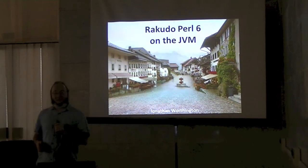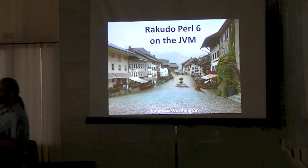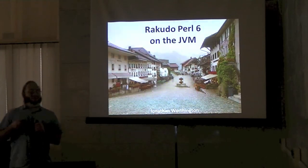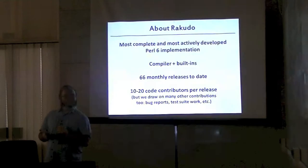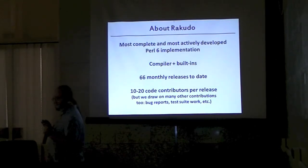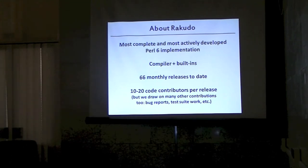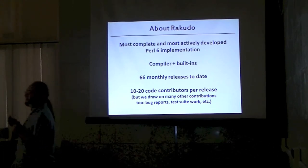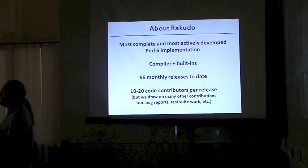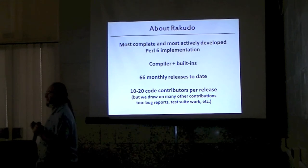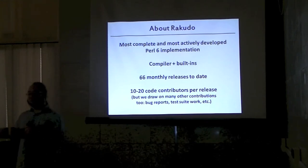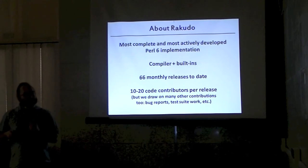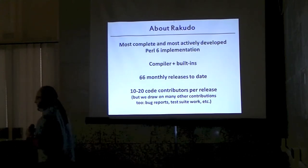What I'd like to talk about today is getting Rakudo onto the JVM. This is something I've been working on for the last around 10 months. Just to clear out what we're talking about here — first of all, what is Rakudo? Rakudo is an implementation of Perl 6. So unlike in Perl 5, where we have the one true implementation, in Perl 6 we split that up. There's a language specification, and along with it there's a test suite which actually forms part of the specification — it's kind of an executable spec.